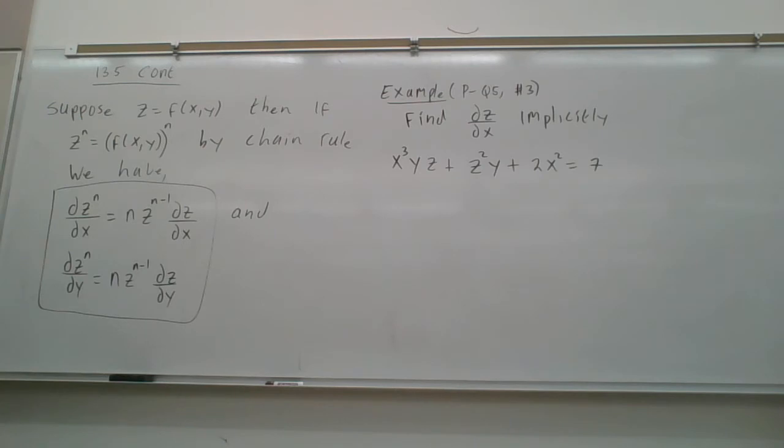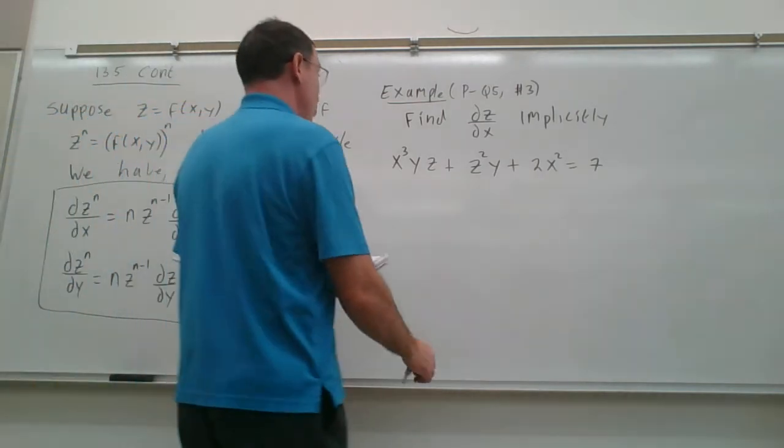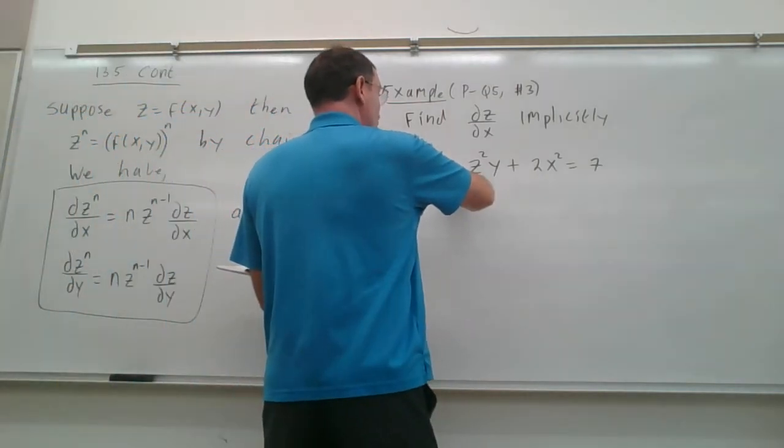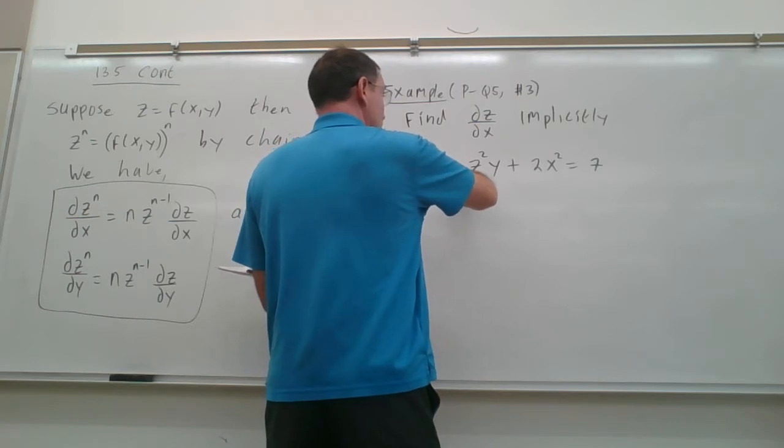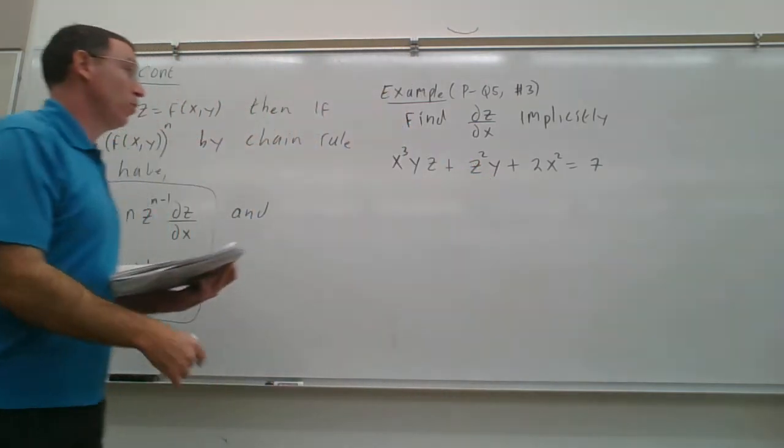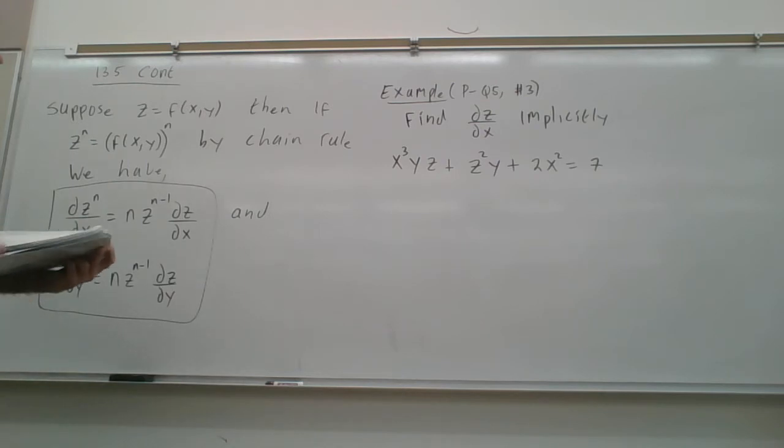Okay, so it says find implicitly, because this would be fairly hard to solve for z, with z here and z squared here. So therefore, we're going to find the answer implicitly.